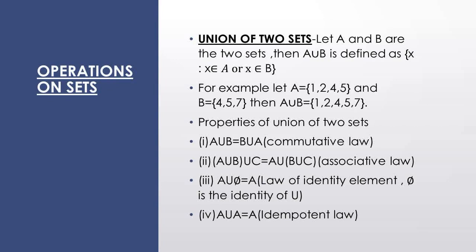A union B के पास जो elements हैं, वो ऐसे elements हैं जो या तो A में हैं या B में हैं. किसी भी एक में अगर element है, तो वो A union B में आएगा.